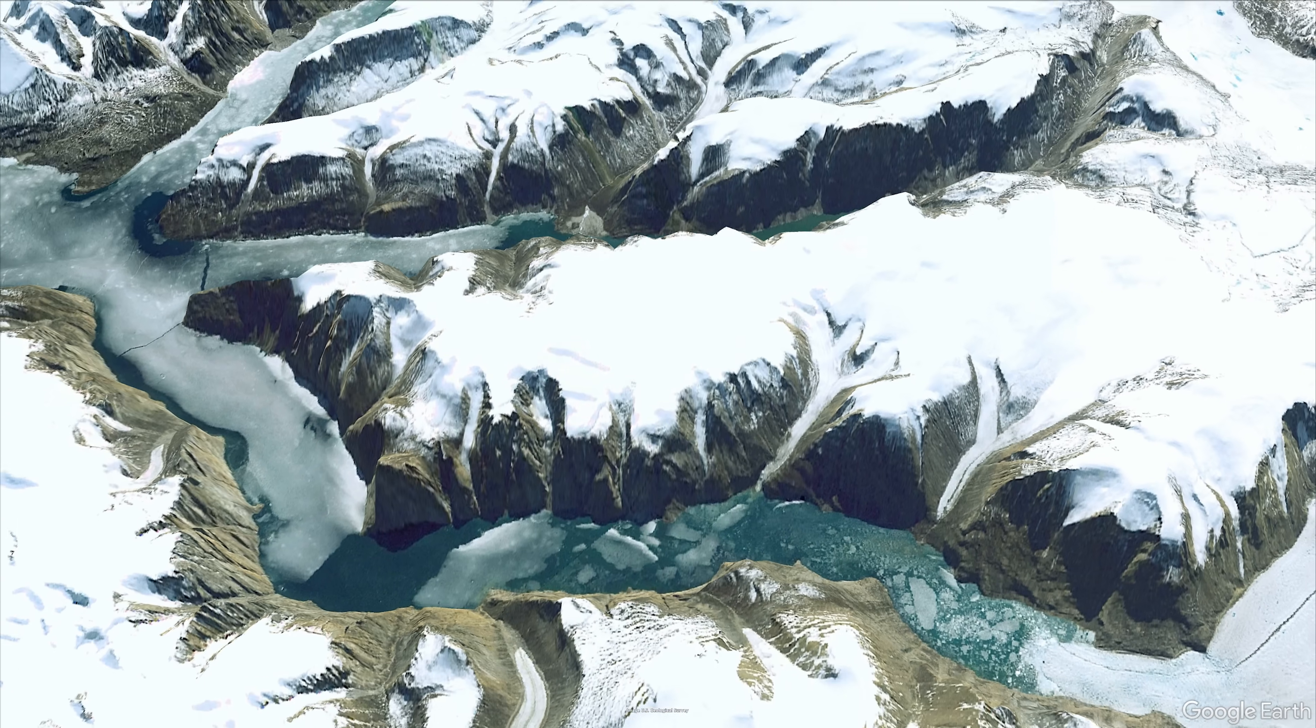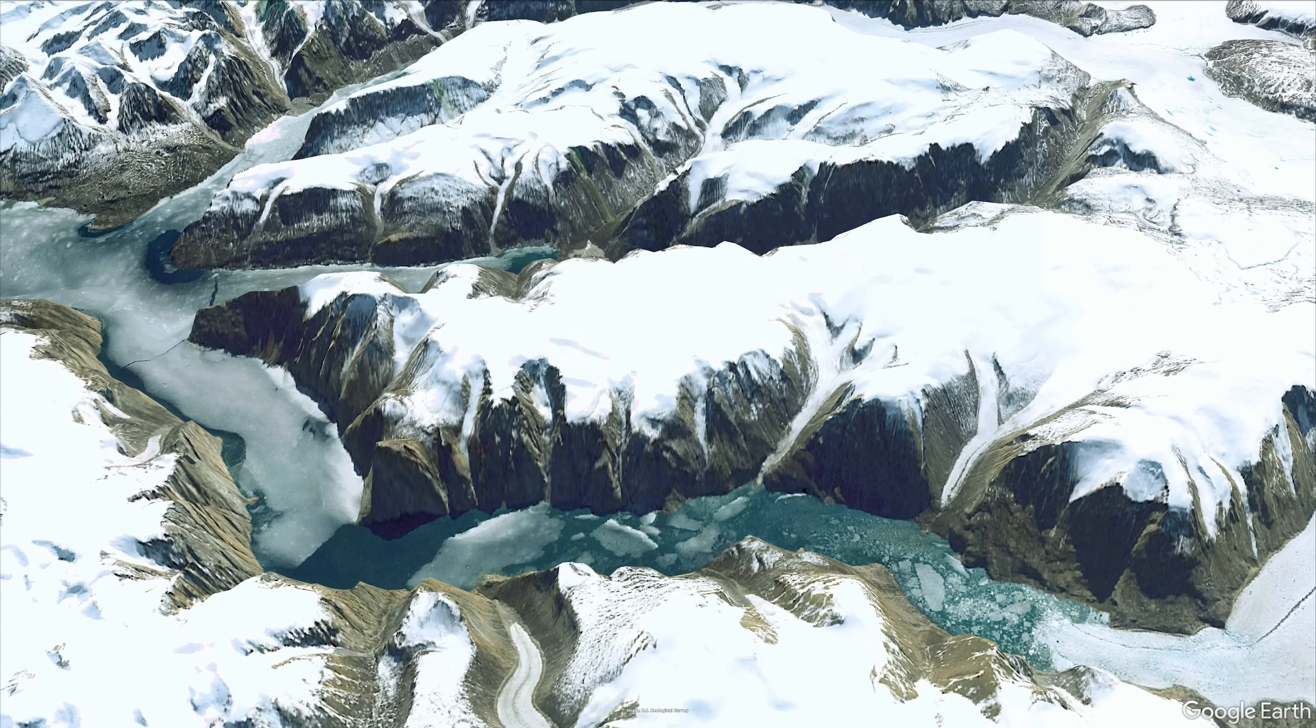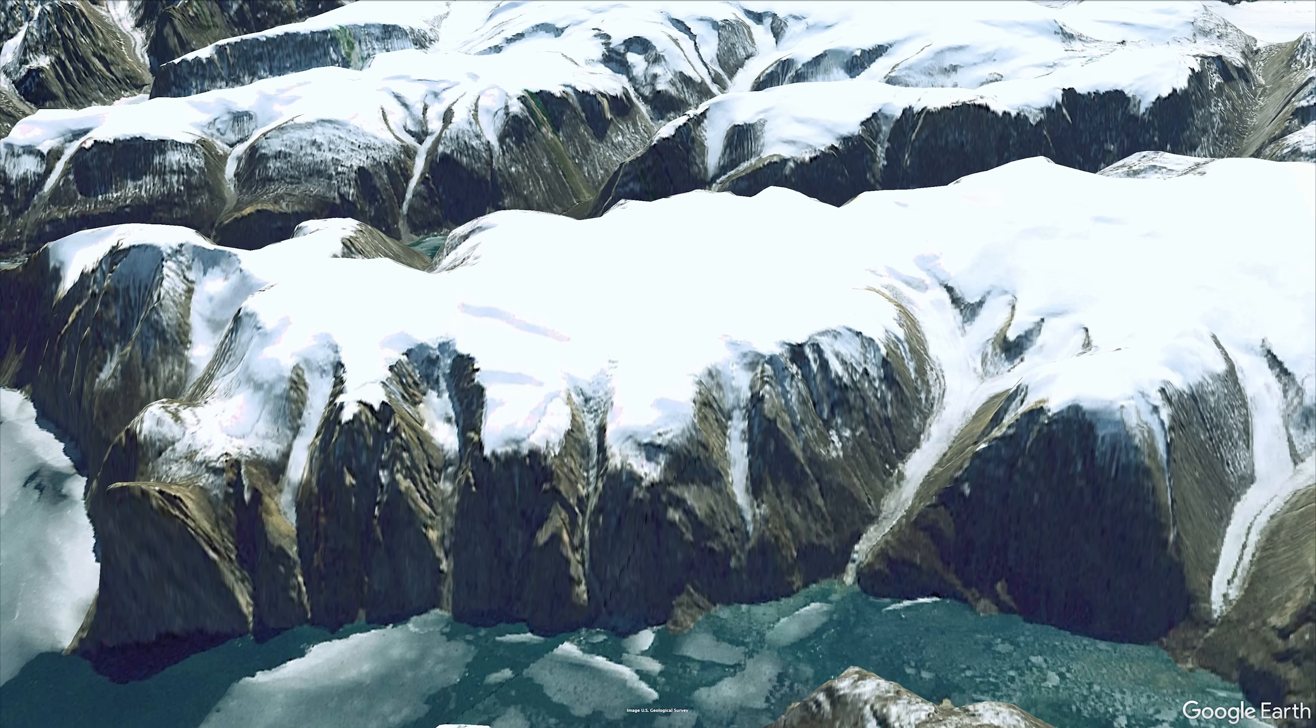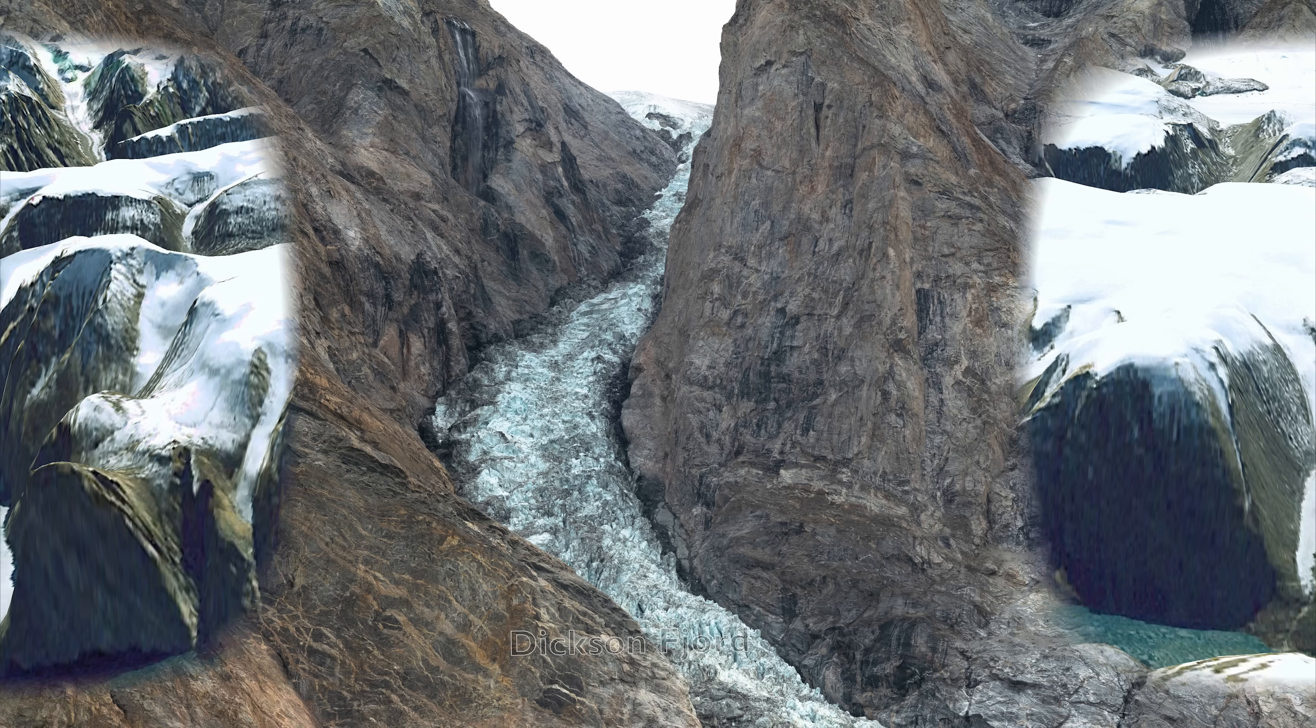Dixon Fjord has steep sides, over a thousand meters high, with a number of gullies on its southern slopes, each containing glaciers plunging steeply into the waters of the fjord below.